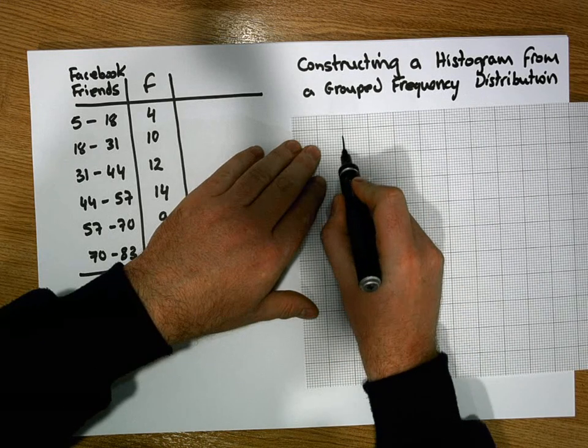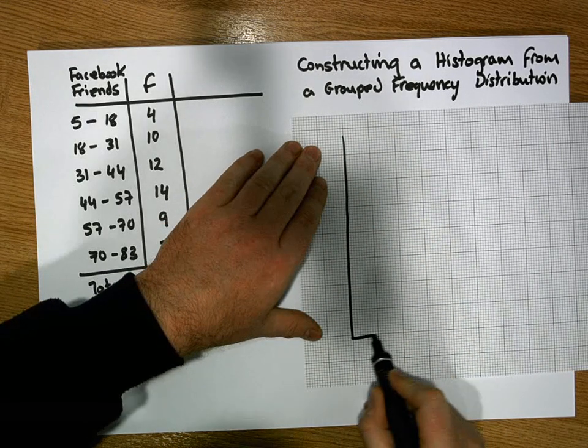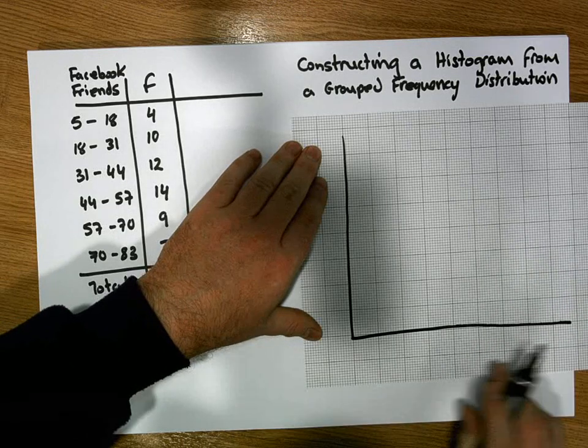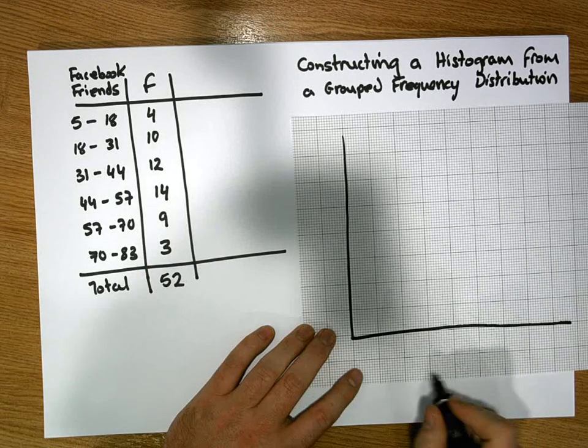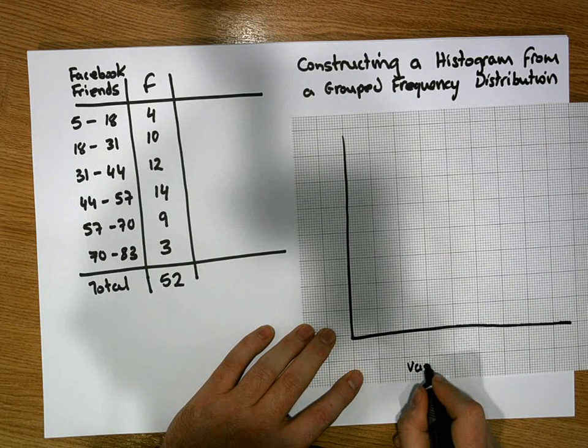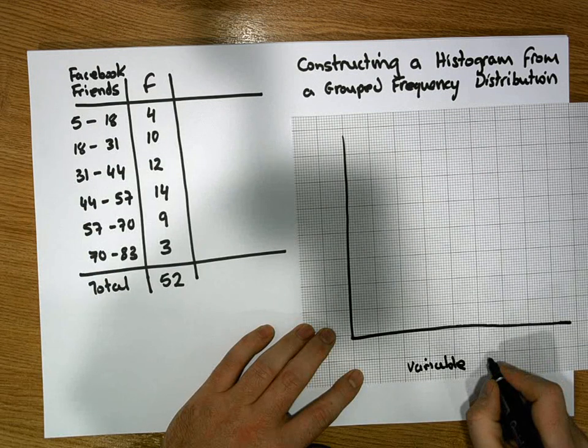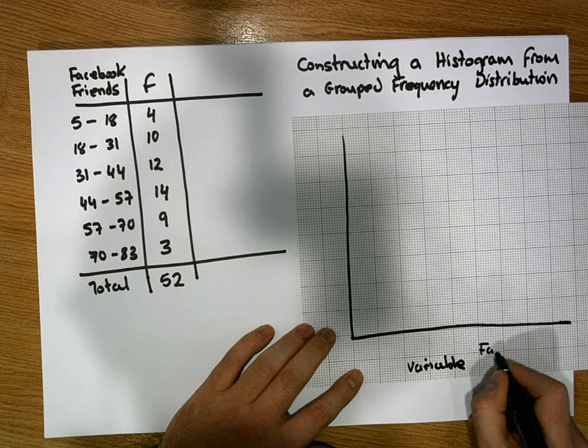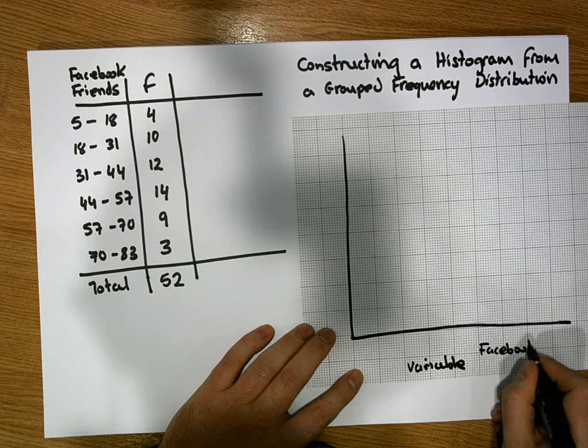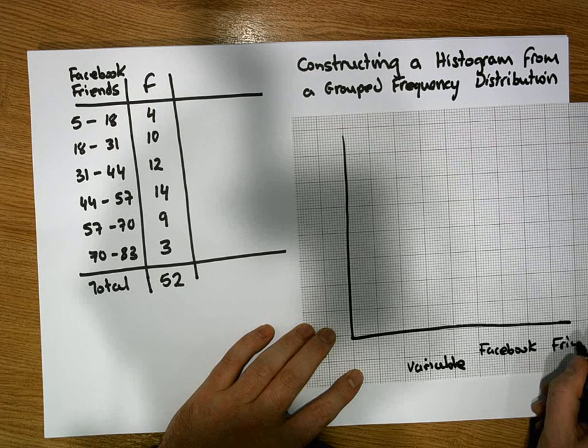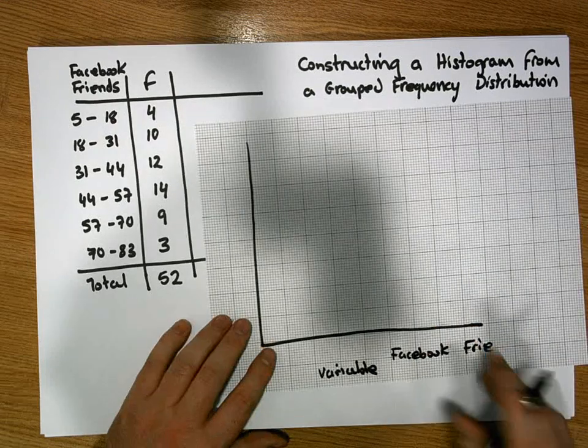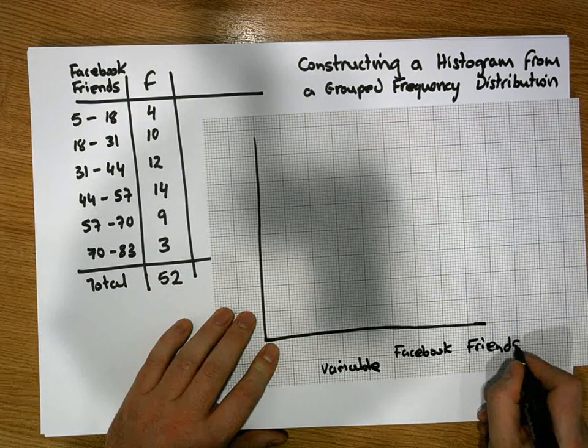There is a vertical axis and there is a horizontal axis. The horizontal axis represents the variable that we were measuring. In our case, Facebook friends. So let's say Facebook friends, or how many Facebook friends an individual has.